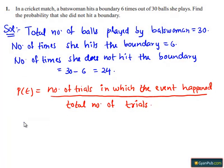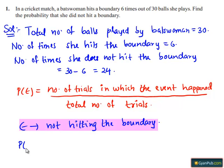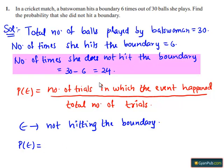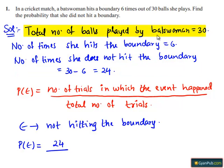Let E be the event of not hitting the boundary. Then P(E) equals the number of times she does not hit the boundary, which is 24, divided by the total number of balls played by the batswoman.